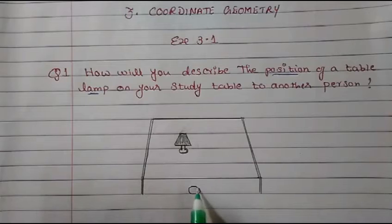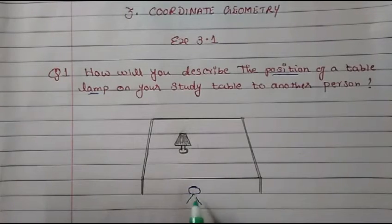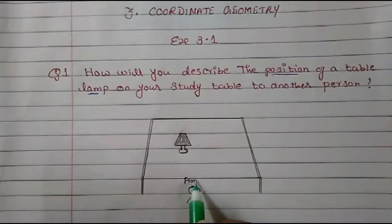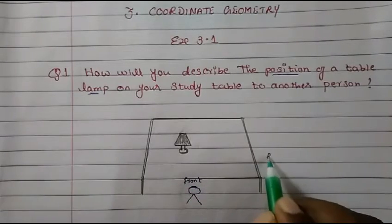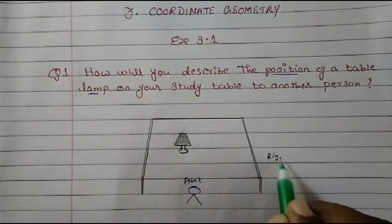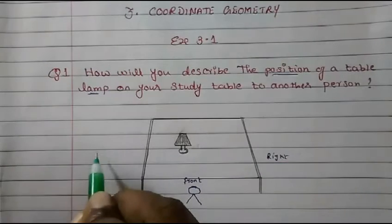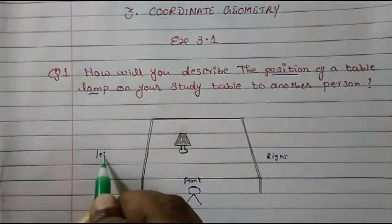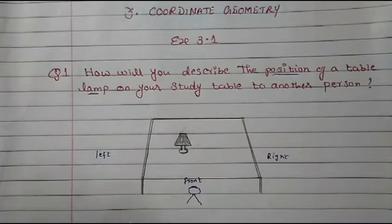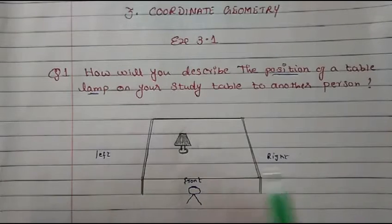For example, if you are sitting in this direction, if your chair is here, then this becomes your front side, this becomes your right side, and this becomes your left side.